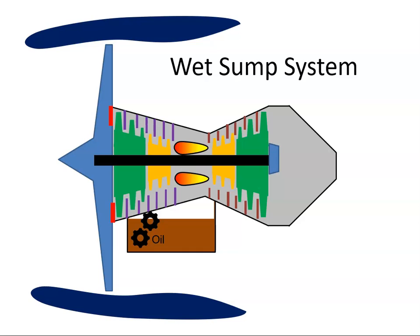Oil systems can be considered to be either wet sump systems or dry sump systems. A wet sump system is where the oil sump or oil reservoir is an integral part of the engine.